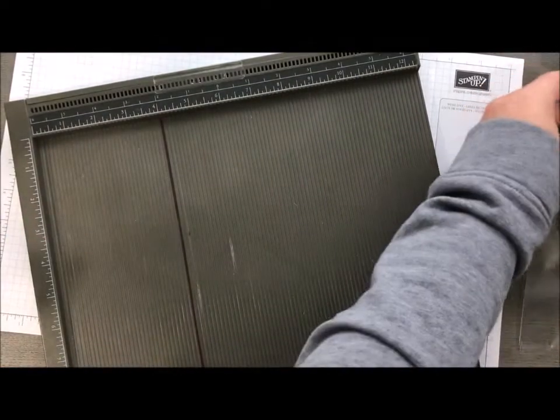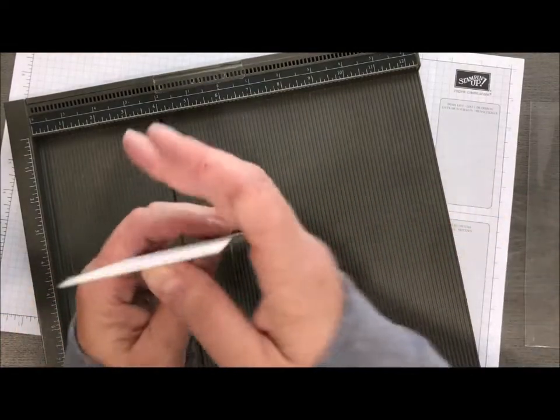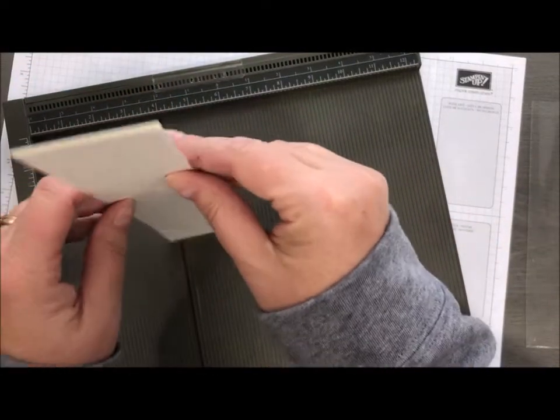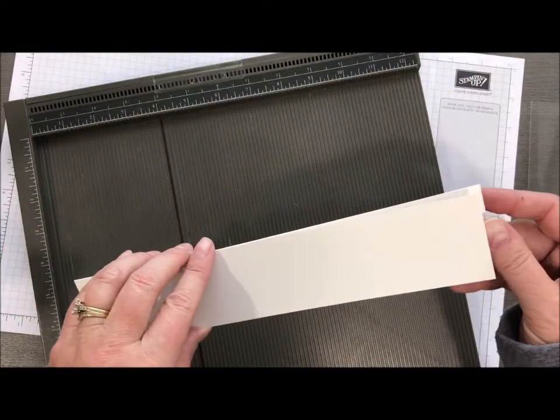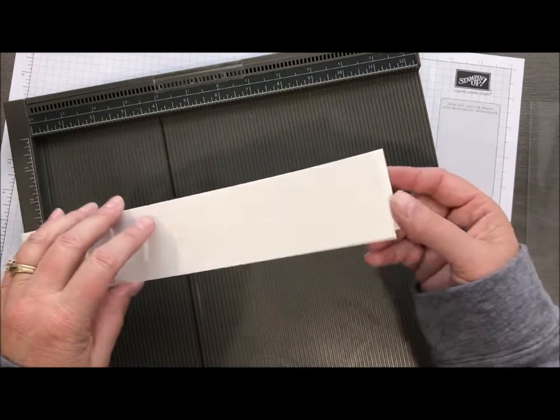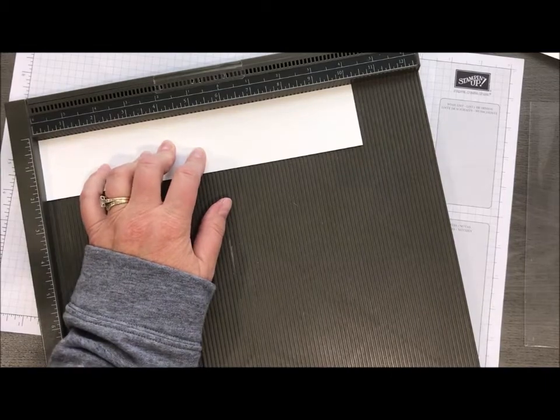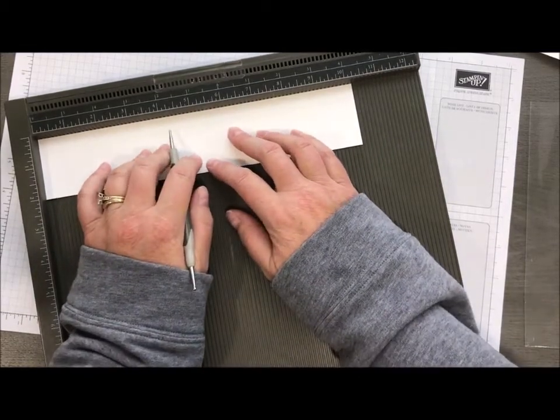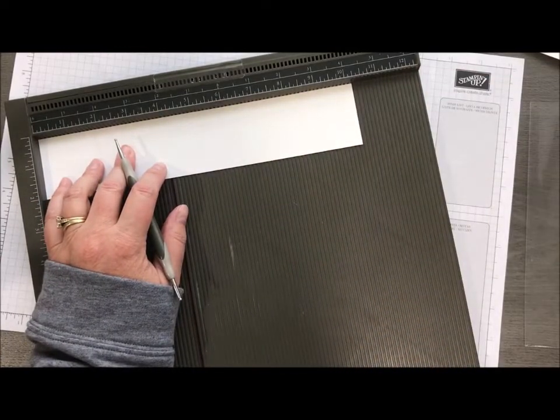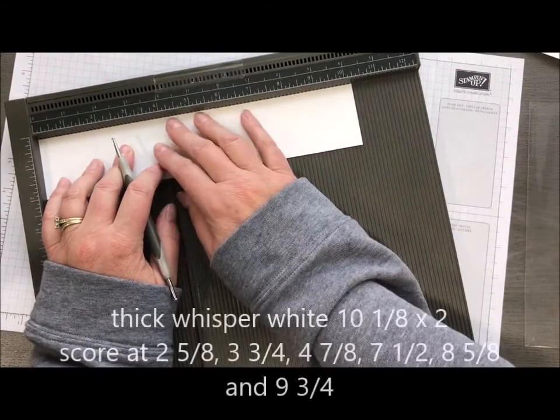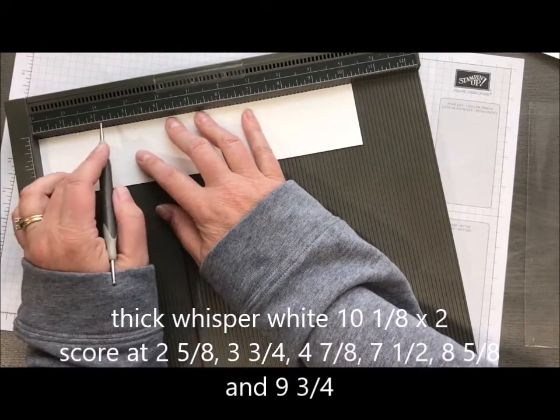So we're gonna pull in our Simply Scored tool. The other thing that we're gonna use is thick whisper white. That actually just makes this project go together so much better. So we're gonna take two pieces of whisper white, and they are very similar in size, but you're gonna notice that one is a smidge bigger than the other, and that is so that the top can go over top of the bottom. So we're gonna take a piece that is ten and one-eighth by two, and we're gonna score at two and five-eighths.